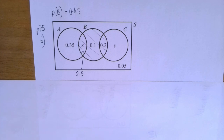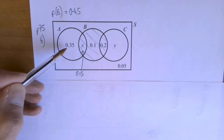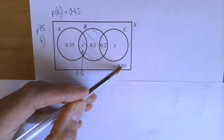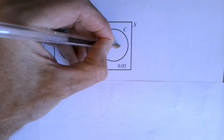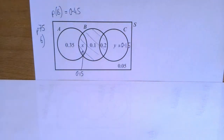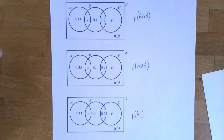The probability of everything will always add up to one. I've got 0.45 and 0.35, that makes 0.8, and then 0.85, so y has to also be 0.15 for that to work.